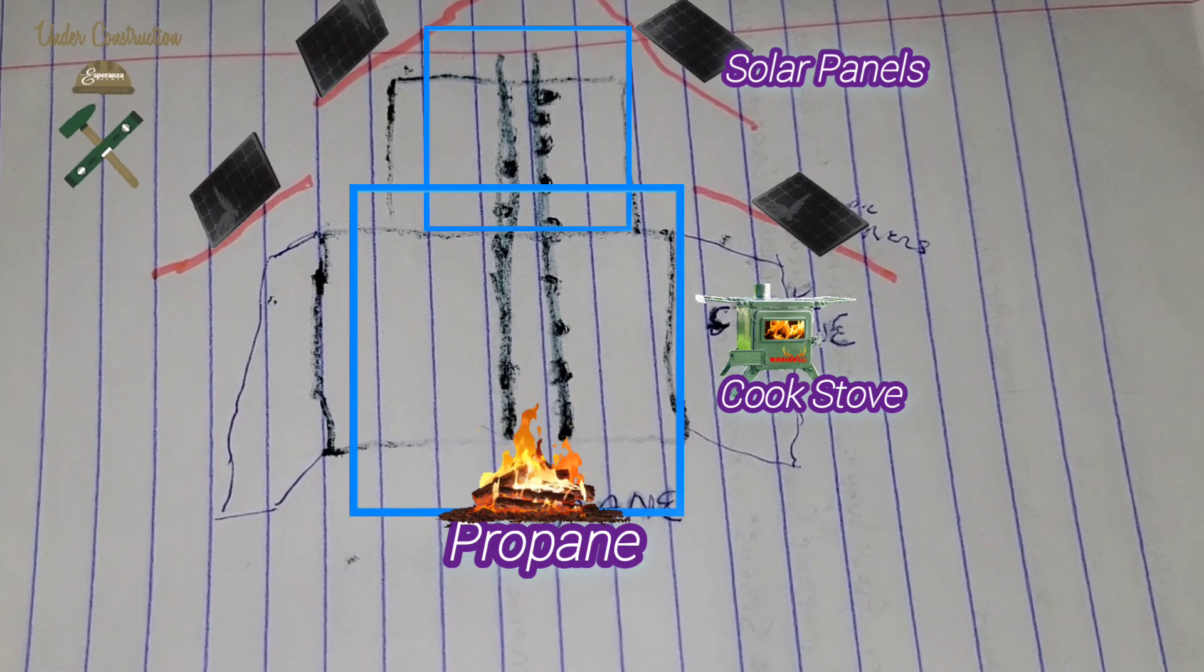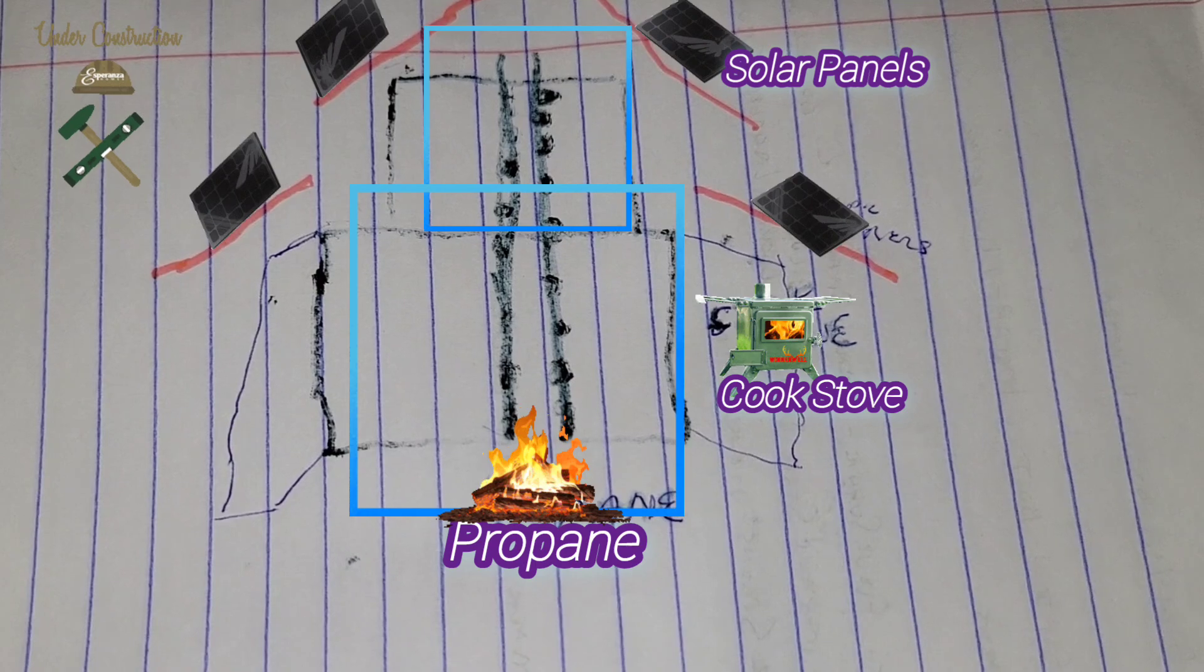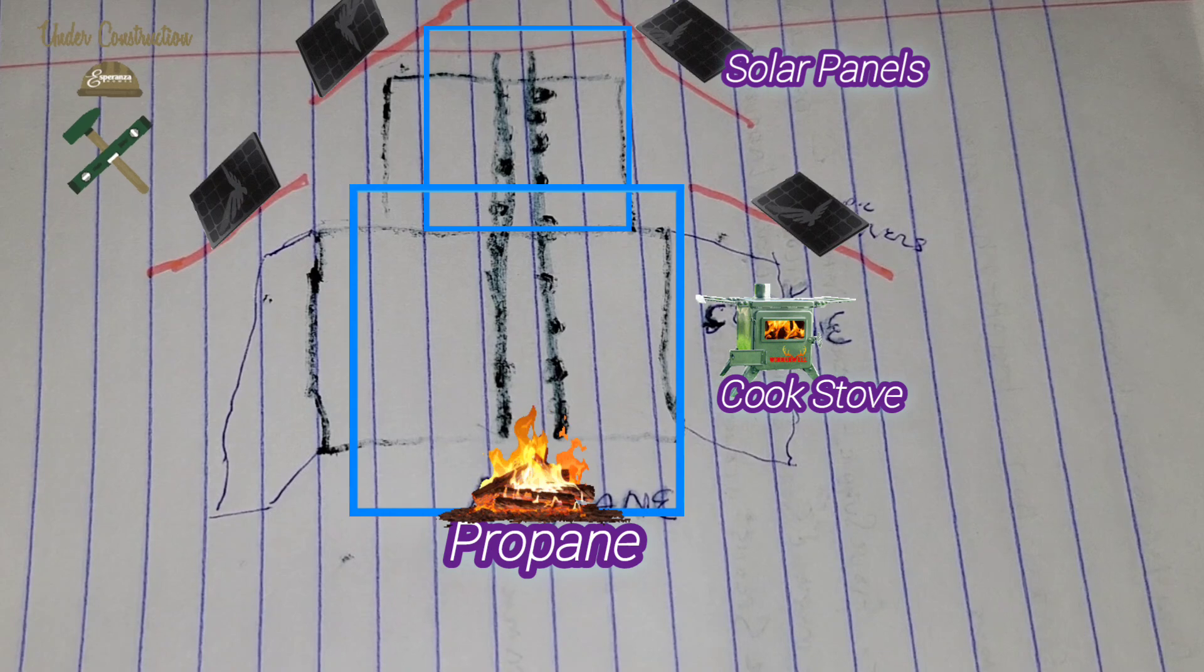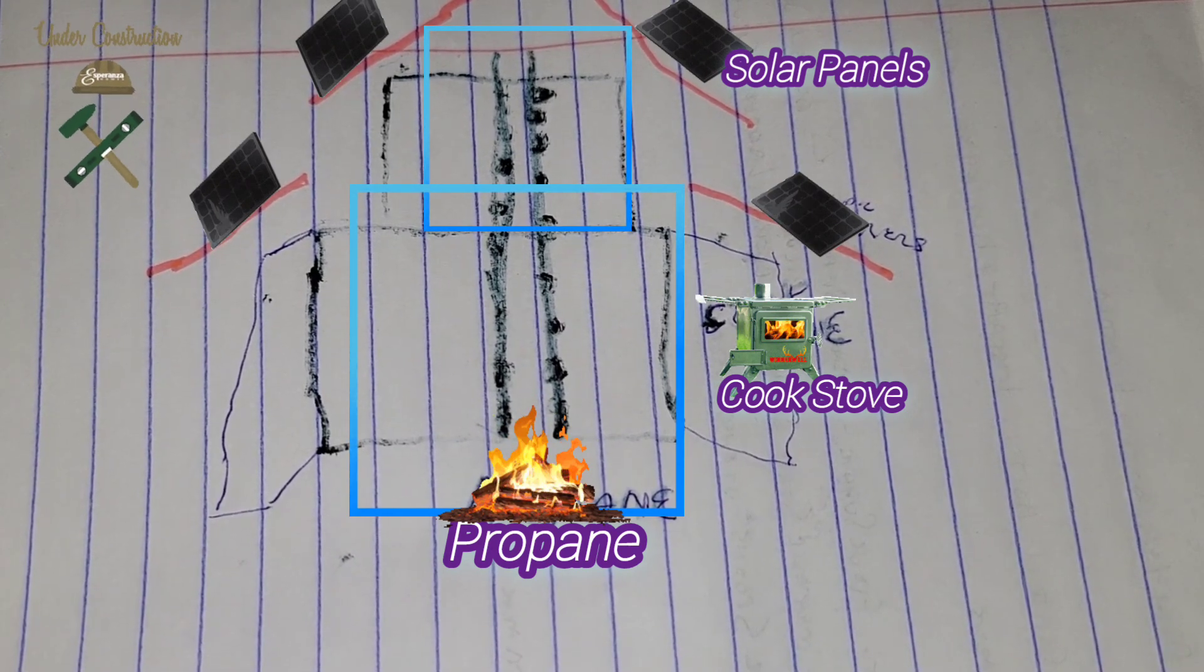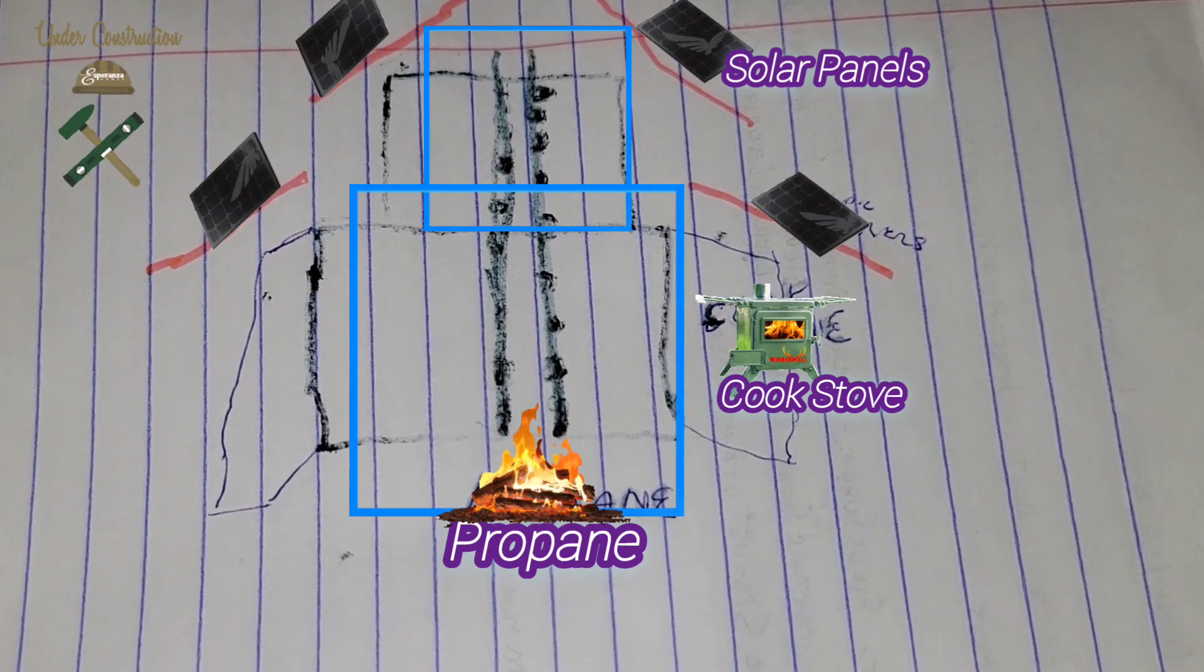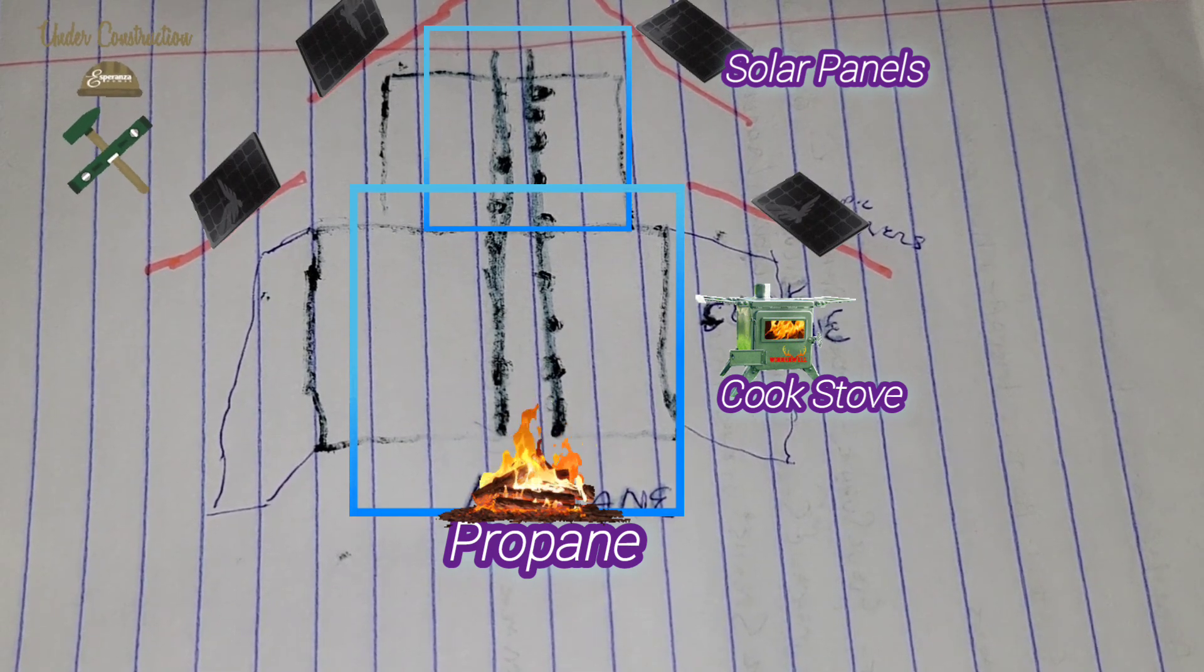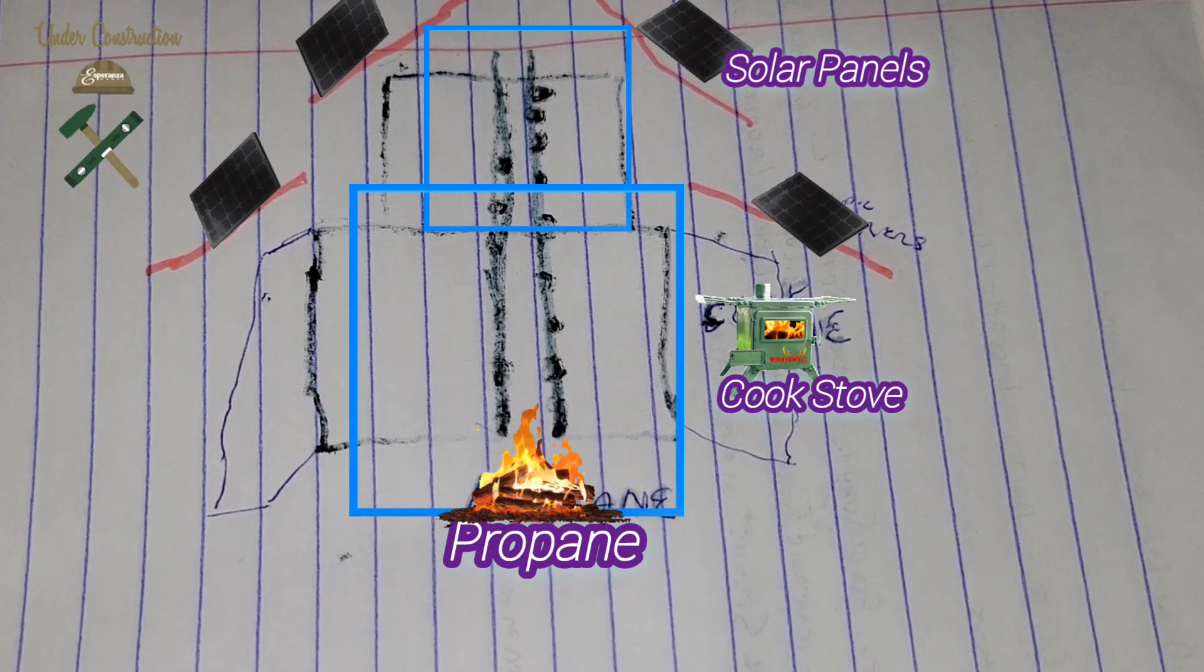I'm still going to be hooked up to the grid. I would be insane to try and do all this and not be. If I found that I lived in it and I found I never needed the electricity, okay then maybe I'd consider not. But I happen to know that there are cloudy days, snowy days. I just at this point in time I would feel better about staying hooked up to the grid.